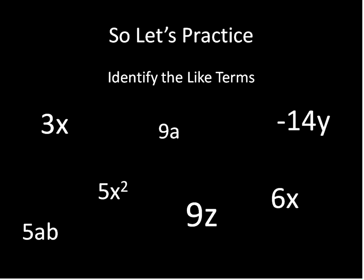So let's go ahead and practice a little bit. Go ahead and identify the terms that are exactly alike. We've got 3x, 9a, negative 14y, 5x squared, 5ab, 9z, 6x. If you're looking through here and being completely confused, that's okay, because what I've done is sort of tried to create a bit of a trick. The only terms that are alike are 3x and 6x. 9a is not the same as 5ab. A as a variable is not the same as ab, just like x squared is not the same as x. So any difference in the variable, and they are not like terms, and positive or negative doesn't matter. We are only looking at if the variable is the same.